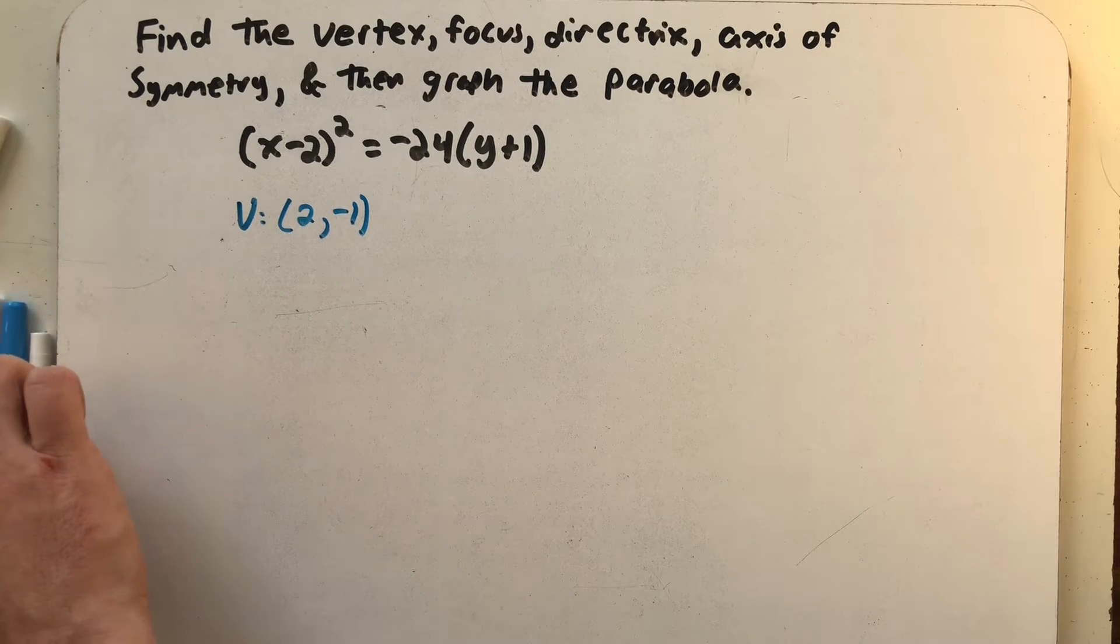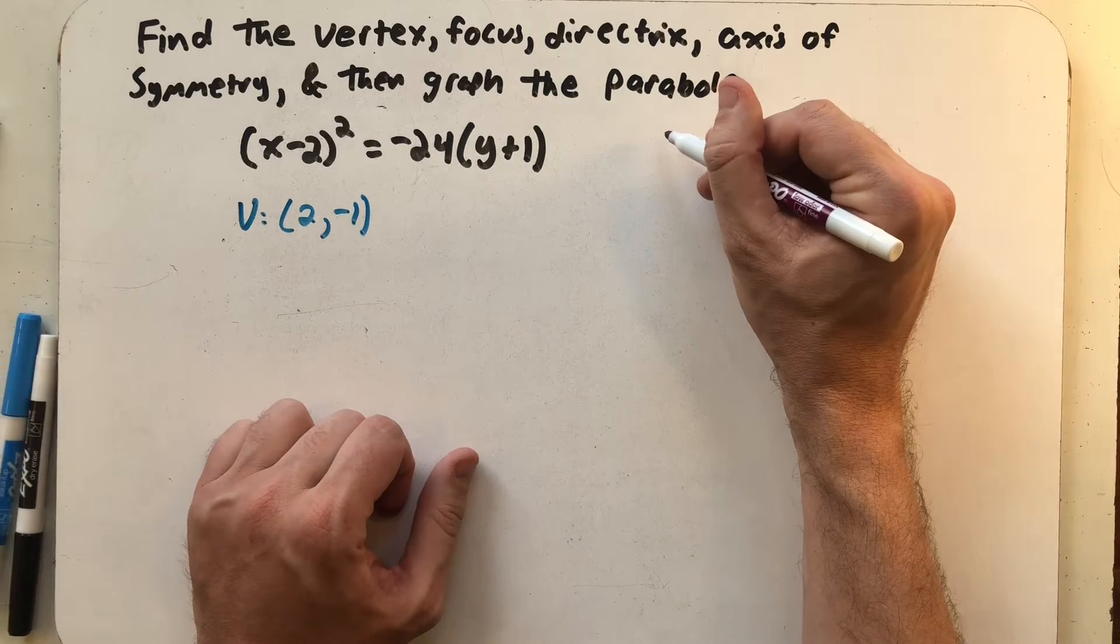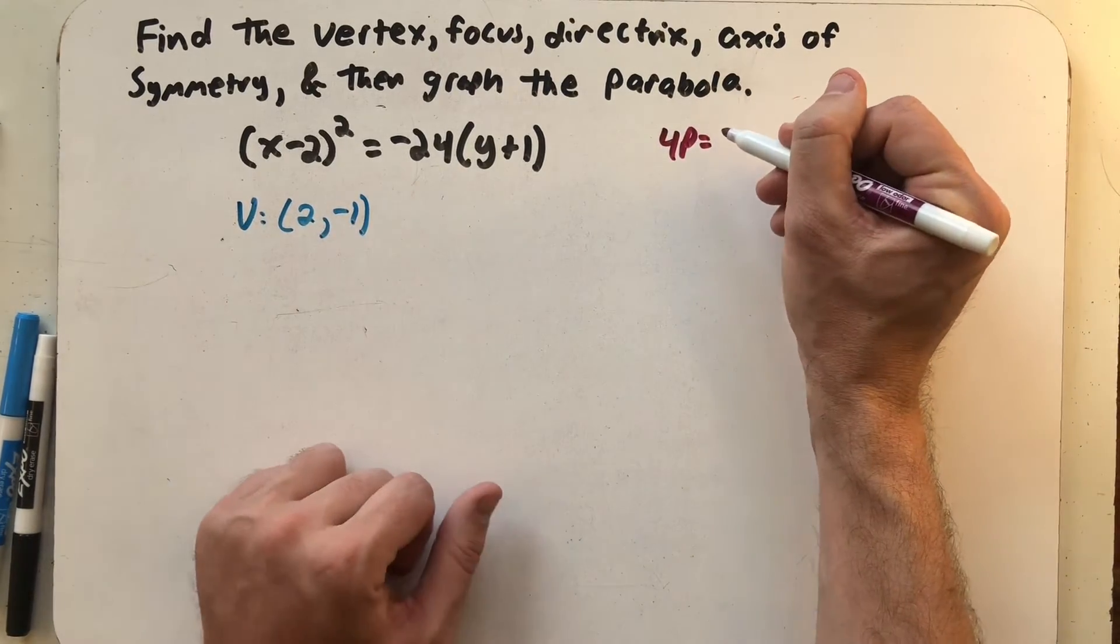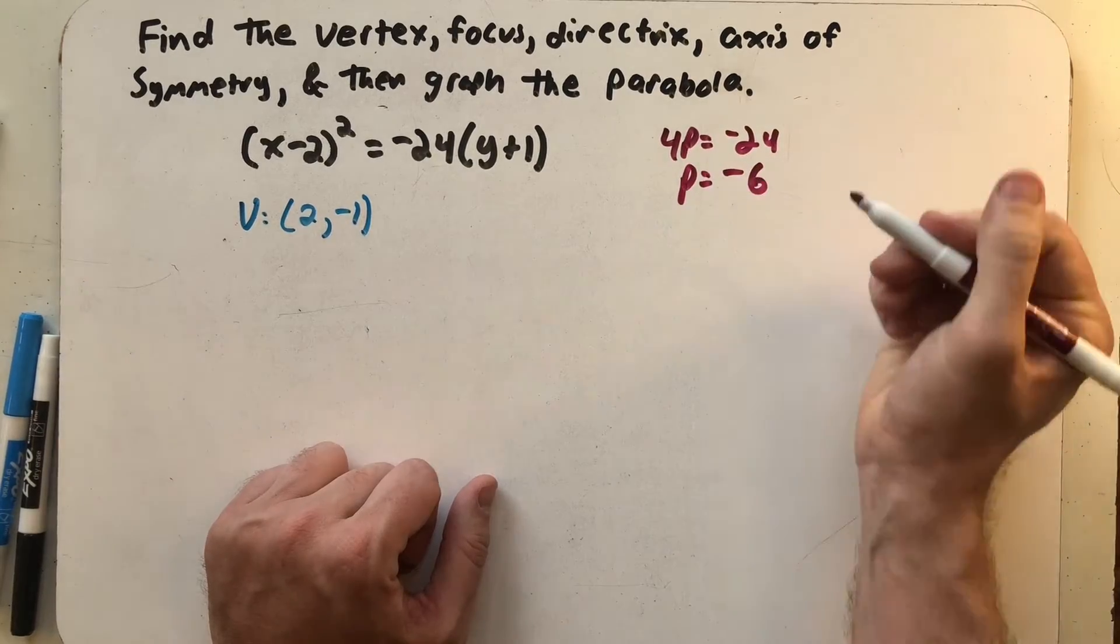Everything else about the process we've been using stays the same. I need to know the value of p. So 4 times p, this number out front is -24, and p has to be -6.